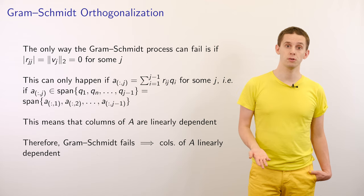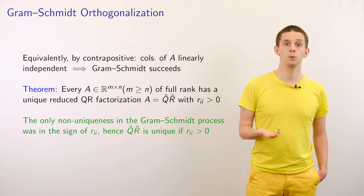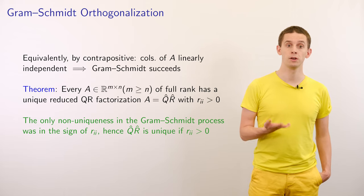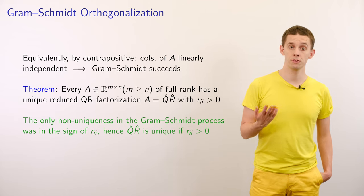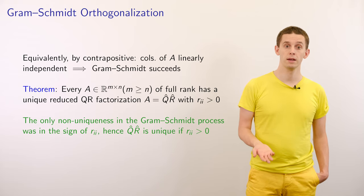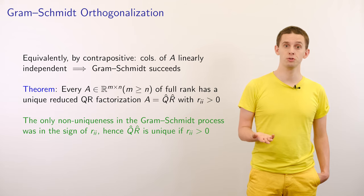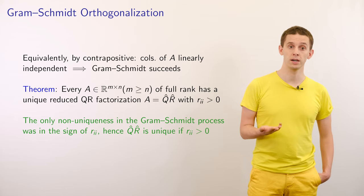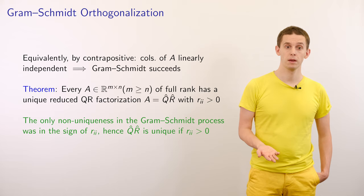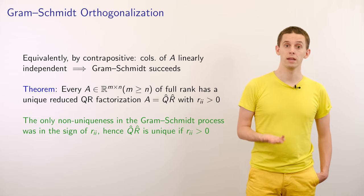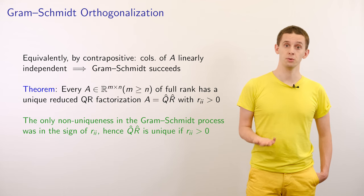So if Gram-Schmidt fails, that tells us the columns of A are linearly dependent. Equivalently, if the columns of A are linearly independent, the Gram-Schmidt process will succeed. A theorem states that every m by n matrix with m ≥ n of full rank has a unique reduced QR factorization A = Q̂R̂ where all diagonal terms rii are greater than zero. The only non-uniqueness comes from the signs of the rii terms.